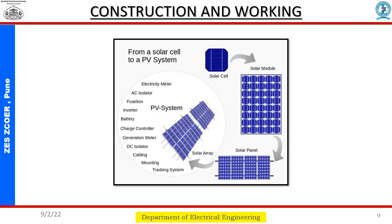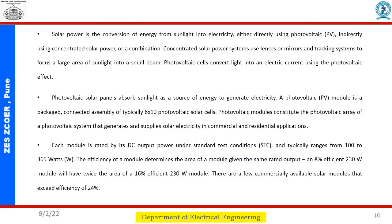In this slide we cover the construction and working of the solar cell, with an image showing a solar cell through to a PV system. Solar power is the conversion of energy from sunlight into electricity — either directly using PV cells, indirectly using concentrated solar power (CSP), or a combination. CSP systems use lenses or mirrors and tracking systems to focus sunlight into a small beam. PV cells convert light into electric current using the photovoltaic effect.